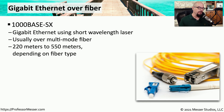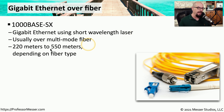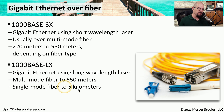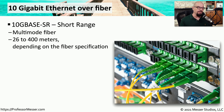For Gigabit Ethernet over fiber, you might use 1000BASE-SX, which uses a short wavelength laser over multimode fiber, supporting distances of 220 to 550 meters depending on the fiber type. For longer distances, 1000BASE-LX uses a long wavelength laser, extending to 550 meters on multimode fiber and up to 5 kilometers on single mode fiber.